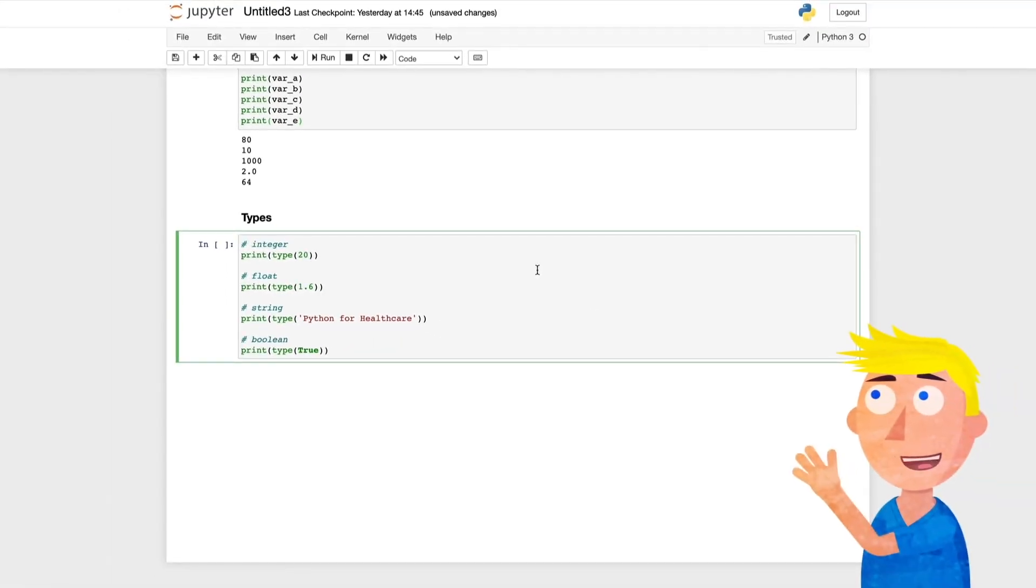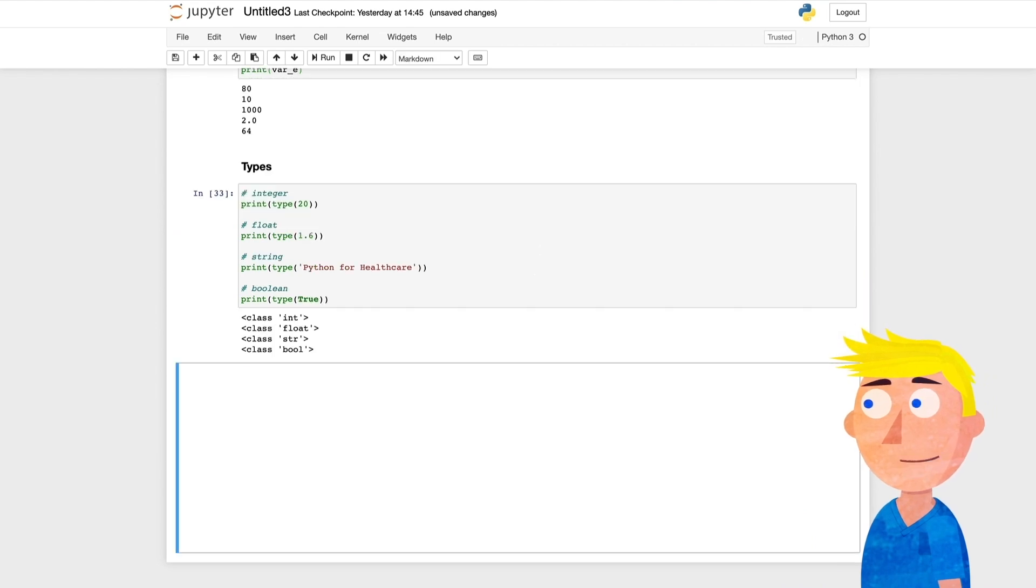Here we can see the different variables written out in our Jupyter notebook. I've wrapped them in the type function. The type function will return the type of whatever is written within the curly brackets. So if we run this cell we can see that each type is printed out below.